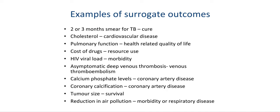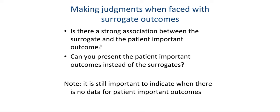HIV viral load requires judgments about its association with morbidity in patients living with HIV. If review authors are interested in venous thromboembolism but only have information about asymptomatic deep venous thrombosis, they must make judgments about the directness of such evidence. Blood levels of calcium phosphate may be very poor indicators of coronary artery disease. Coronary calcification measured by CT scanning will be only a surrogate for coronary artery disease and related events. Tumor size may or may not be judged an appropriate surrogate for survival. In public health, a reduction in air pollution may or may not relate to morbidity or respiratory disease. All of these surrogate outcomes require judgments about how they truly relate to patient-important outcomes.